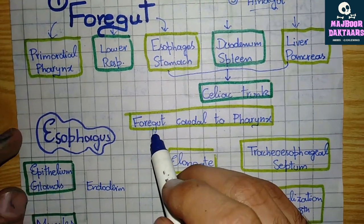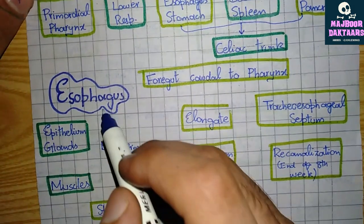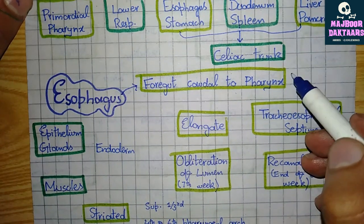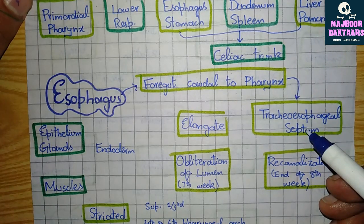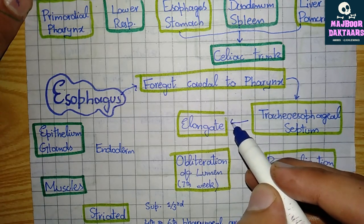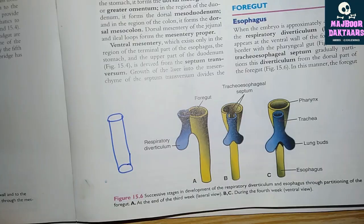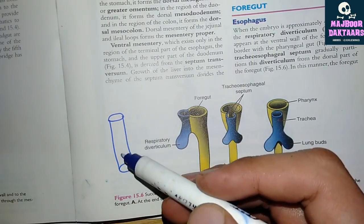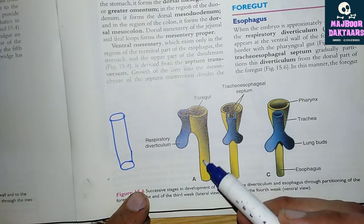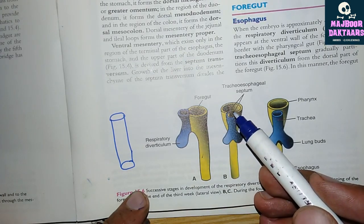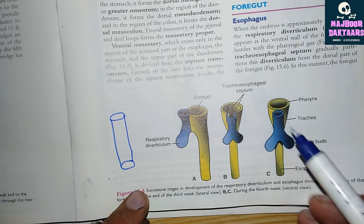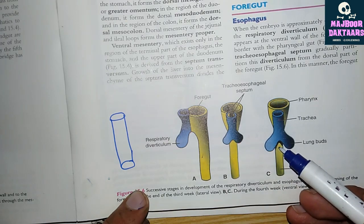The esophagus is formed in the part of the foregut caudal to the pharynx. The primordial pharynx is divided by a tracheoesophageal septum into the anterior lung bud and the posterior esophagus, which elongates and forms the primordial esophagus. The primordial pharynx is a tube in the cranial portion of the foregut; it divides into the anterior respiratory diverticulum and the posterior foregut, separated by the tracheoesophageal septum.